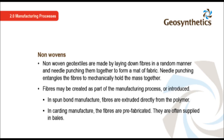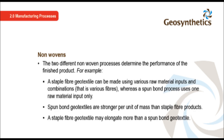Non-woven geotextiles are made by laying down fibres in a random manner and needle punching them together to form a mat of fabric. Needle punching entangles the fibres to mechanically hold the mass together. Fibres may be created as part of the manufacturing process or introduced separately. In spun bond manufacture, fibres are extruded directly from the polymer. In carding manufacture, the fibres are prefabricated and often supplied in bales. The two different non-woven processes determine the performance of the finished product.